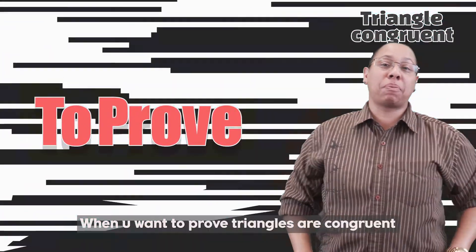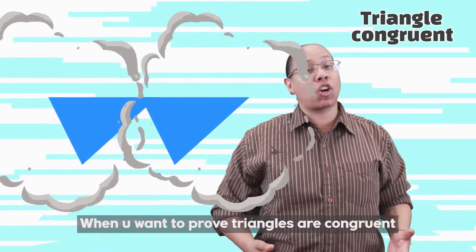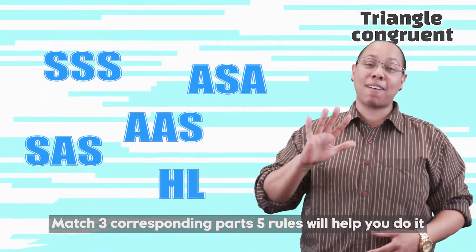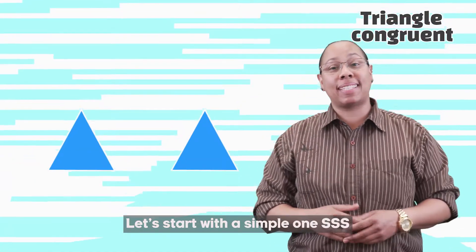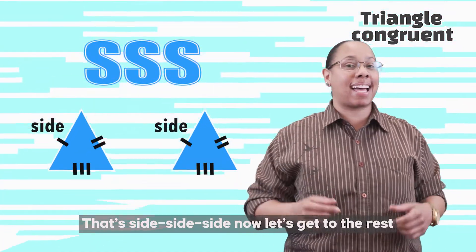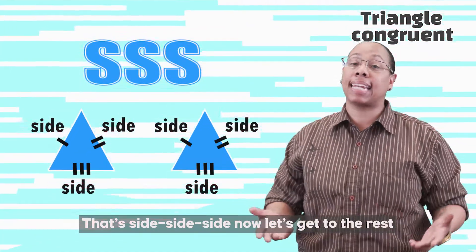When you want to prove triangles are congruent, match the corresponding parts — five rules will help you do it. Let's start with a simple one: SSS, that's side, side, side.